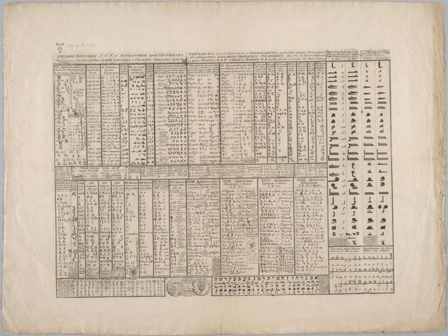The first fully phonemic script, the Proto-Canaanite script, later known as the Phoenician alphabet, is considered to be the first alphabet, and is the ancestor of most modern alphabets, including Arabic, Greek, Latin, Cyrillic, Hebrew, and possibly Brahmic.